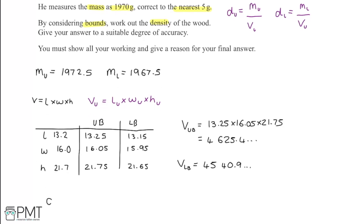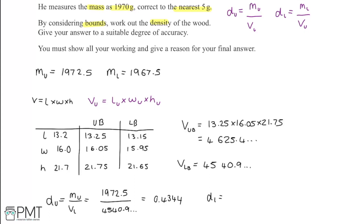Now we can calculate the bounds for density. The upper bound for density is the upper bound for mass over the lower bound for volume: 1972.5 ÷ 4540.9 (using all decimal places stored in the calculator), giving approximately 0.4344. The lower bound for density is the lower bound for mass over the upper bound for volume: 1967.5 ÷ 4625.4, giving approximately 0.4254.